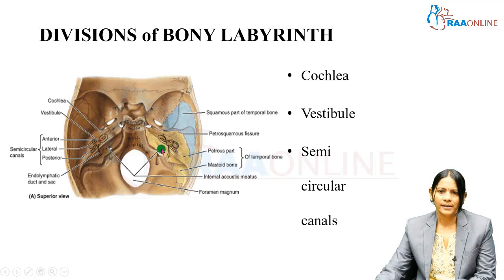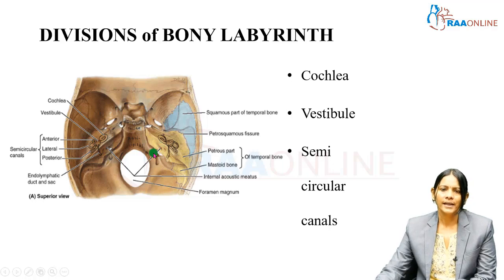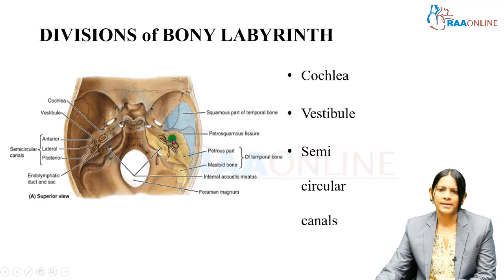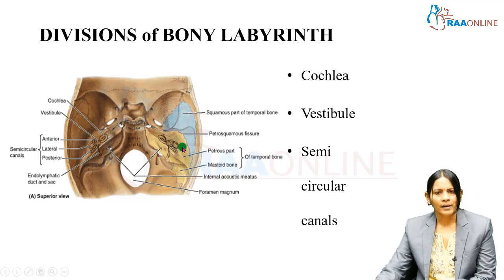You can see that the inner ear is positioned like this. This is the internal acoustic meatus through which the seventh and the eighth cranial nerves leave the pons to enter the inner ear. This is the cochlea, here is the vestibule, and this is the semicircular canals. From this position you can say that cochlea is anteriorly positioned, semicircular canals are posteriorly positioned, and the vestibule is laterally positioned where the middle ear cavity will be.